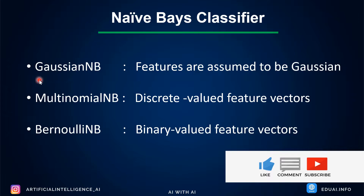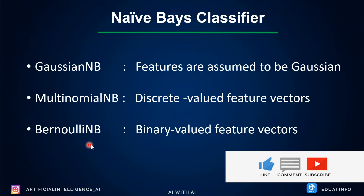Gaussian Naive Bayes is used when the features are assumed to be Gaussian, meaning the dataset given is continuous. Multinomial Naive Bayes is used when the values or features given are discrete. Bernoulli Naive Bayes should be considered when the input features are binary — when you want to predict two classes: yes or no, true or false. When the features are of boolean type, use Bernoulli Naive Bayes. For multiple discrete values, use Multinomial Naive Bayes, and for continuous Gaussian features, use Gaussian Naive Bayes.